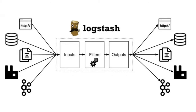We can take in data from an HTTP endpoint, a database, file system, RabbitMQ, or Kafka. We run it through the pipeline, filtering out some data and transforming it, then send it to any number of destinations. You can send data to Redis, a JDBC adapter, SQS, and AWS.